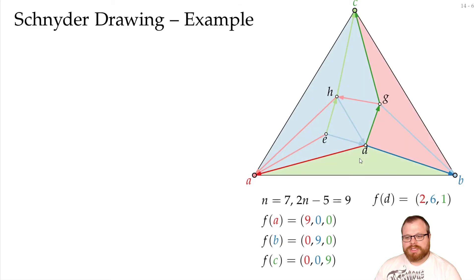What about d? Well, we have the green region down here, the red one here, the blue here. Here we have 1 face, so this is a 1. Here we have 2 faces, so this is a 2. Here we have 6 faces, so this is a 6.